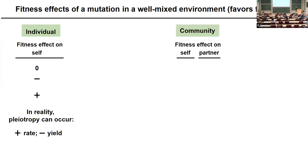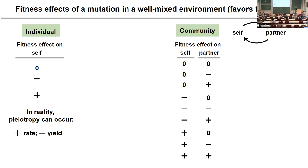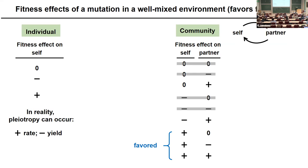In a community this is even more complex, because you can consider fitness effects not only on self but also on partner. On self it can be zero, minus, or plus; on partner it can be zero, minus, or plus — so three-by-three gives nine types of interactions. Focusing on the cooperative community, we're not interested in interactions that are purely zero or minus, because those can never be selected for in a well-mixed environment. We're left with five types of fitness effects. Three that matter here: strictly self-serving; cheating — gaining benefit by compromising the partner's fitness; and win-win. We wanted to see whether win-win mutations could occur. The answer is yes, and I will show you evidence.